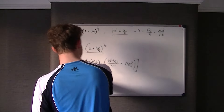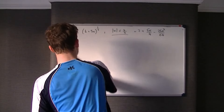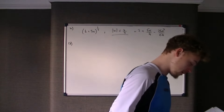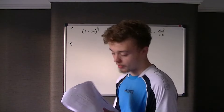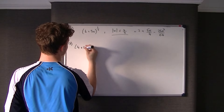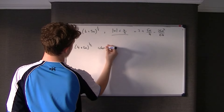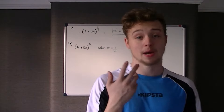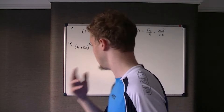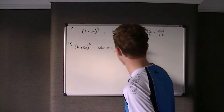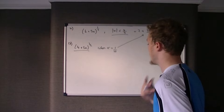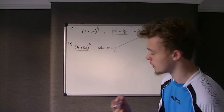Part B is a bit unusual and easy to slip up on. It asks for the exact value of (4 + 5x)^(1/2) when x equals a tenth. Your natural instinct would be to substitute x equals a tenth into the binomial expansion we just found — but that's completely incorrect, because substituting into an approximation won't give you an exact value.